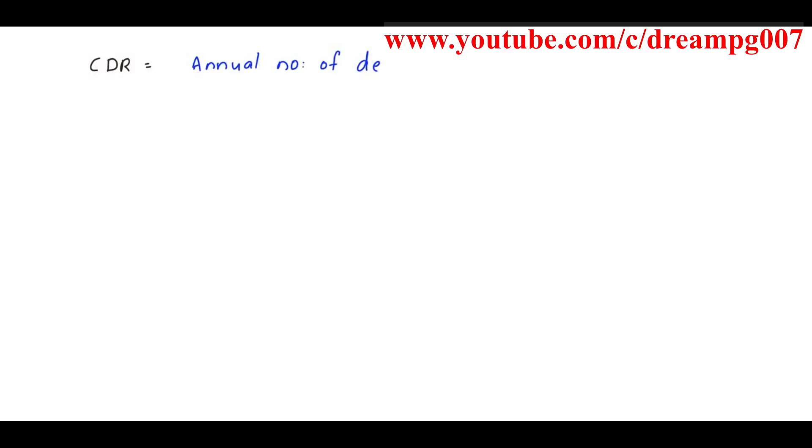Whereas annual number of deaths per thousand mid-year population is the crude death rate. Crude death rate is calculated by the formula: number of deaths in a year divided by mid-year population times 1000.